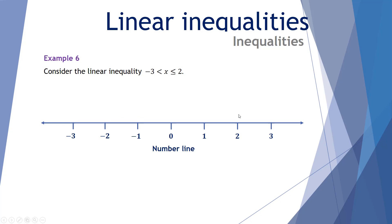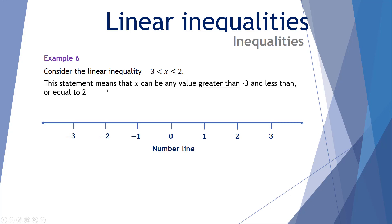Example number 6: consider the linear inequality -3 < x ≤ 2. This statement means x can be any value greater than negative 3 and less than or equal to 2. Negative 3 does not have an equal sign, so it's not included — the circle is hollow. Because the circle above the 2 is filled, it includes 2 in our number set.